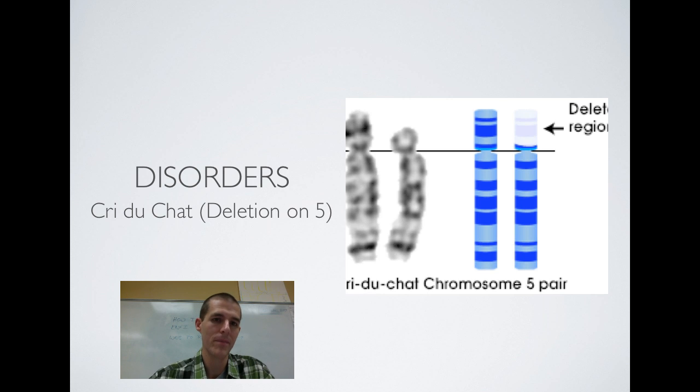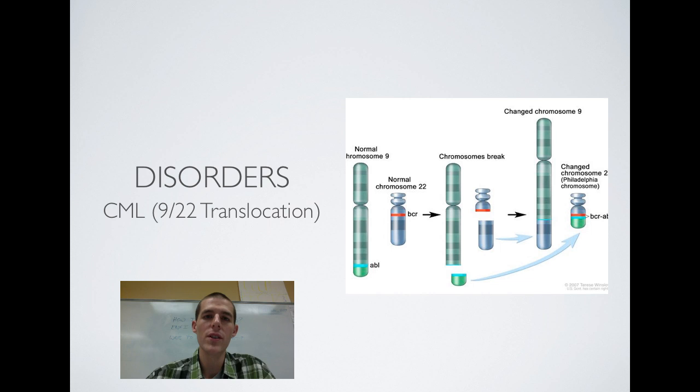Now, for real this time, last disorder. CML, which is a type of leukemia, results from a 9-22 translocation. So, you're taking a piece from 9 and a piece from 22, as you can see there in the diagram on the left, breaking them off, switching around translocation style so that part of chromosome number 9 is now on 22 and 22 is on 9. This results in white blood cells that do not properly adhere to the cell cycle, so they kind of divide uncontrollably, leading to leukemia, which is a proliferation of white blood cells.